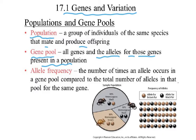We've talked in the previous video about three alleles for blood group. Then we have allele frequency — the number of times an allele occurs in a gene pool compared to the total number of alleles in that pool for the same gene. For example, 48% are heterozygous black, 16% are heterozygous black, and 36% are homozygous brown.